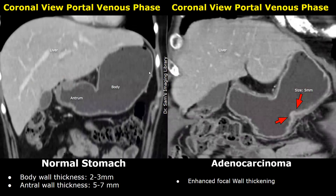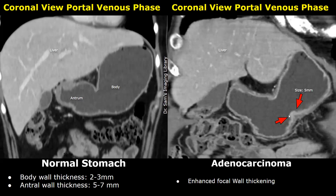This is a coronal image showing the stomach filled with water. The small projections are the rugal folds. The stomach wall at the antrum has increased thickness compared to the stomach wall in the body — the antral wall thickness is between 5 and 7 millimeters. In the image on the right there is an enhanced focal wall thickening that is somewhat irregular; this wall thickness was 5 millimeters and after biopsy it was found to be adenocarcinoma.